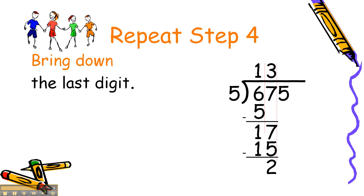Let's go to step 4 again. Bring down. This time it's the last digit. We only have a 5, so we bring it down to the 2 and write the 5 there.